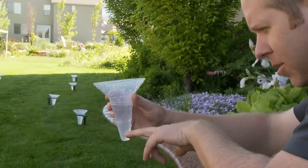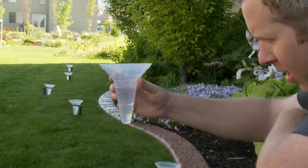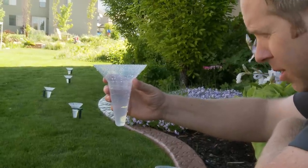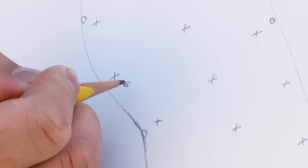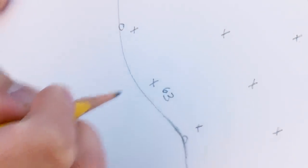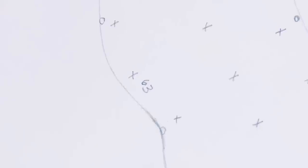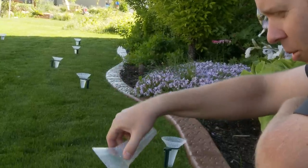Each line on our catch cup represents five milliliters. In this case, we've got approximately between 60 and 65 milliliters. We'll mark that down as 63 on our paper. After you've recorded your catch cup, I go ahead and dump the water out so I don't record it a second time.